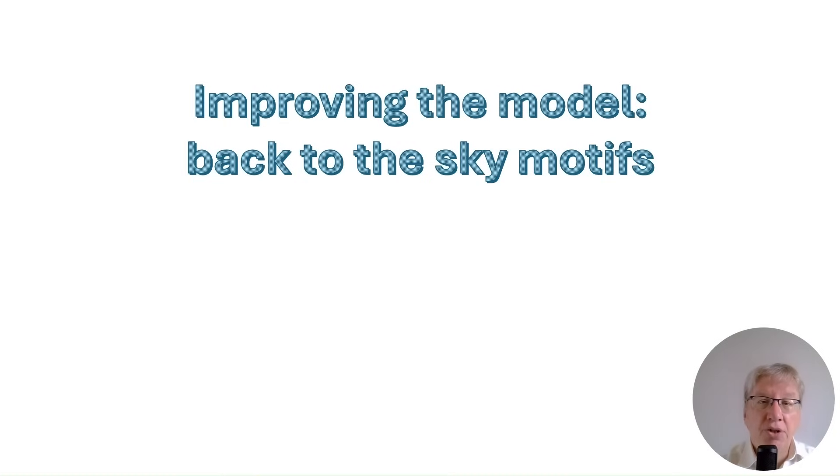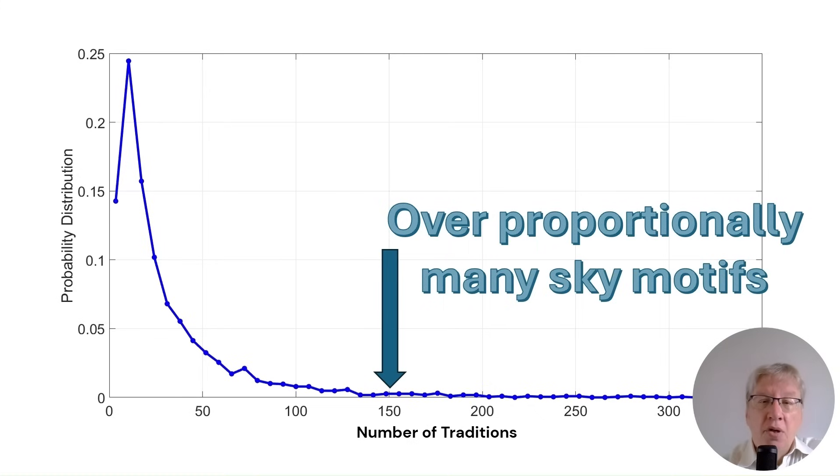Our model does a great job of explaining the life cycle for most myths, but it isn't perfect. It begins to break down when we examine the most widely distributed motifs, what statisticians would call the tail of the distribution. And when we look closer at this specific region of our data, the tail containing the most widespread motifs, we find something interesting. This area has a disproportionately high number of sky-related motifs.